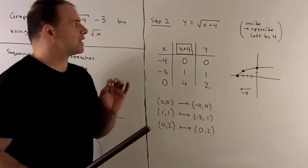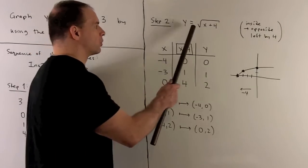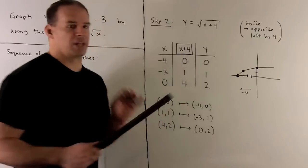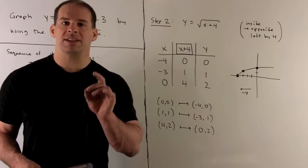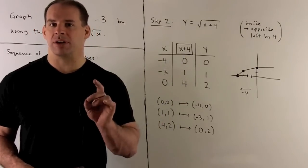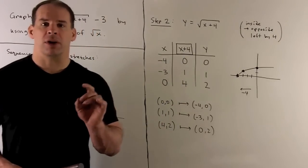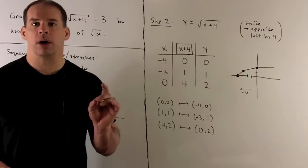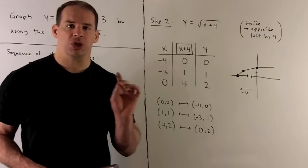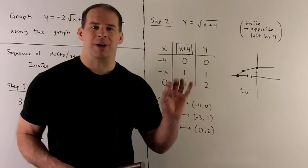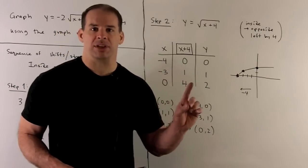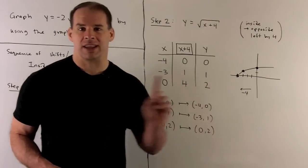Now our first step is going to be to go to y equals square root of x plus 4. So that's on the inside. And when we're on the inside, the effect is going to be the opposite of what you would think. So if I replace x with x plus 4, what you would think would be you want to shift to the right by 4. But since it's on the inside, you do the opposite. So we're going to shift our graph to the left by 4.